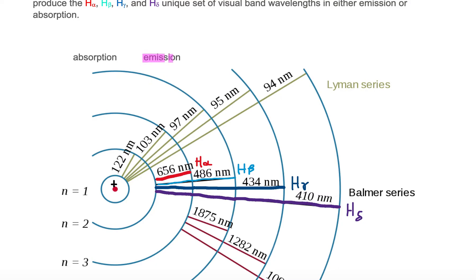Whenever an electron makes a transition downward, it's called emission and you're going to emit light. Whenever an electron moves upward to another orbital, that's called absorption — the electron would need to absorb a photon to move upward. If the electron wants to move from n equal to 2 to n equal to 3, it would need to absorb a red H alpha photon of wavelength 656 nanometers. If it was in the n equal to 3 state and fell down to n equal to 2, it would emit a red photon — that would be H alpha in emission.